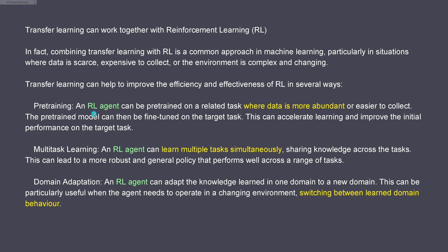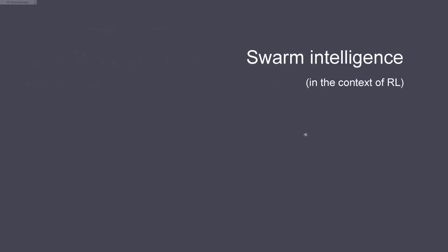A reinforcement learning agent can be pre-trained on a related task where data is abundant - like flight behavior in Earth's atmosphere, where we have thousands of hours of how a fighter jet might behave in storm conditions on planet Earth. With multi-task learning, we can learn multiple tasks simultaneously, sharing knowledge across tasks - but careful, those tasks have to have some similar core functionalities. Or again, domain adaptation: switching between learned domain behaviors, but when does this switching happen? Is it a smooth transition? There are a lot of things you have to take care of, and it's a fascinating topic if you want to integrate this into the behavior of a reinforcement learning agent, especially when everything runs on a transformer-based architecture.